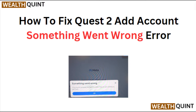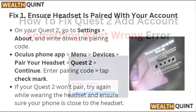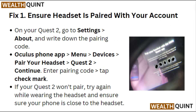Hi everyone. In today's video we will see how to fix the Quest 2 'add account something went wrong' error. Fix 1: ensure the headset is paired with your account. On your Quest 2, go to Settings, then About, and write down the pairing code.